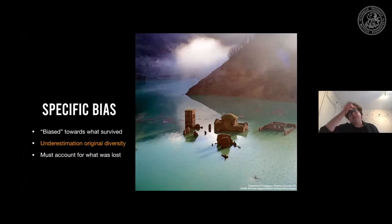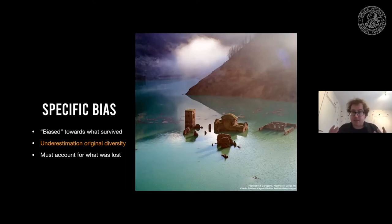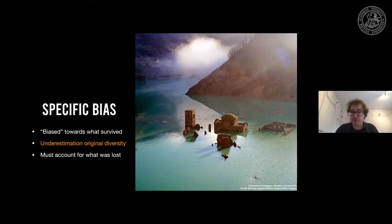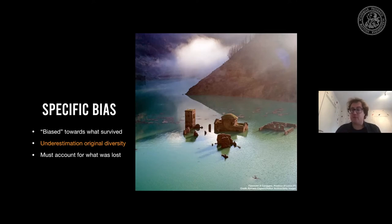From a scientific point of view, the pressing issue is bias. As medievalists, we are biased toward the stuff that actually survived. In a way that makes sense — we have to work with what we have. But because of this bias, we underestimate the original diversity of the literature, and we have to correct that in some way. We have this underestimation that we need to account for somehow.